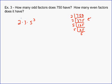So if I want to know the total number of factors, I add 1 to each of the powers, which is going to give you 2 times 2 times 4, which would equal 16. So 750 has 16 total factors.